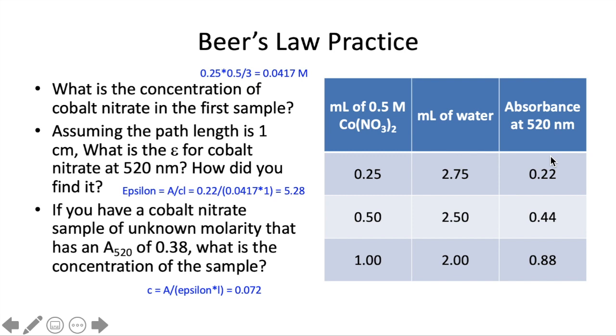Given that information, we can then find epsilon. Plugging in those numbers here and we get an epsilon of 5.28. And then if we have an unknown molarity solution but we know the absorbance, and we know the epsilon now, then we can figure out that the concentration would be 0.072. And your TA can help you with those if you have questions about how to do those problems.